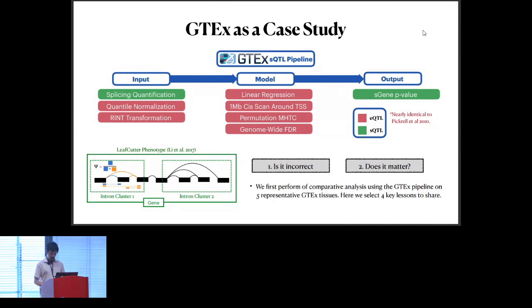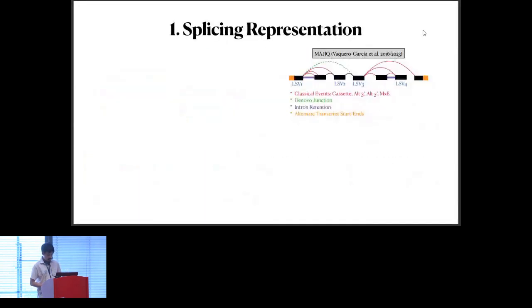To answer this question, we began with a case study on GTEx across five representative tissues to better understand the ramifications of using this pipeline. We summarize some of our key observations in four main lessons. First, it is important to understand that unlike with gene expression quantifications, splicing quantifications and representations are quite diverse. While leafcutter presents one view of splicing through the view of intron excisions, this view is actually very limiting. Here I present an alternative view of splicing, which is represented by the Majique method from our lab.